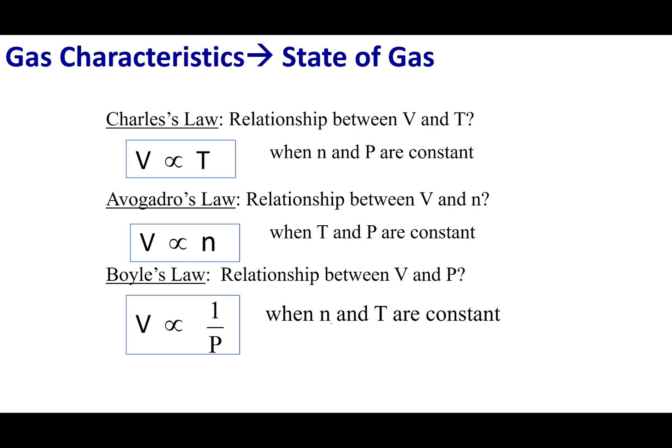So we started out with Boyle, and he kept moles and temperature constant, and what we found was that volume was indirectly proportional to pressure. We then jumped to Charles, who kept moles and pressure constant, and what he found was that volume and temperature are directly proportional. Finally, Avogadro kept temperature and pressure constant, and volume and the number of moles are directly proportional to each other.